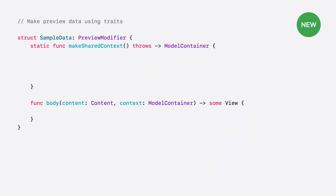Finally, I will return the container. Next, I will need to implement a method which adds this model container to whichever view this sample data is used for. To do that, I will just apply the container using the model container modifier. I will add an extension to preview trait so that I can easily access this sample data. This creates a new static property called sample data, which will apply this sample data structure as a modifier. And now, when I declare a preview for any of my SwiftUI views, I can use .sampleData with the traits parameter. This will create an in-memory model container, load the sample data, and modify my previews to use it in its SwiftUI views.